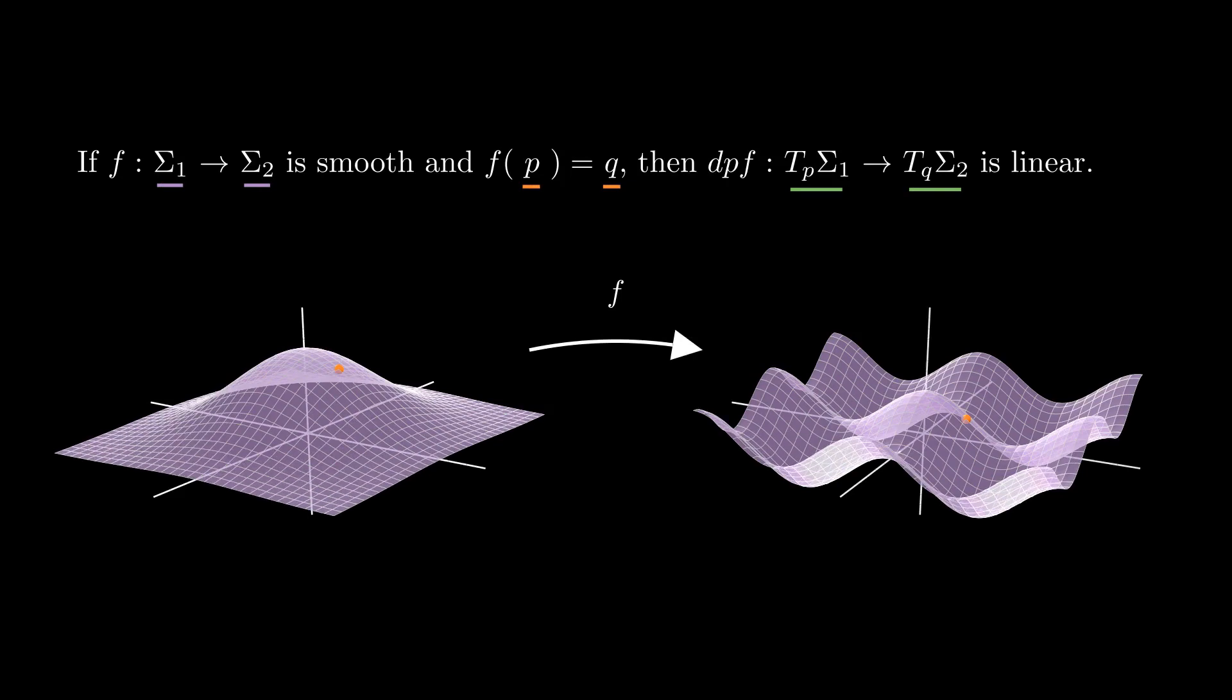Before we move to integral calculus, let us notice that if we have a smooth map f from sigma 1 to sigma 2, then for p in sigma 1, the derivative Dpf is a linear map from the tangent plane to sigma 1 at p to the tangent plane to sigma 2 at f of p.